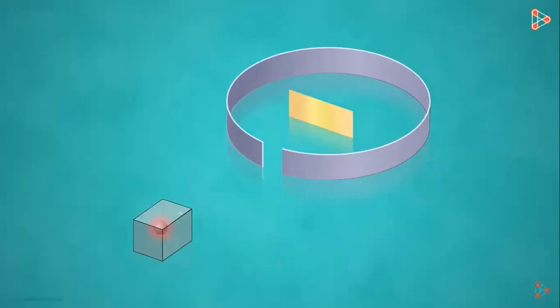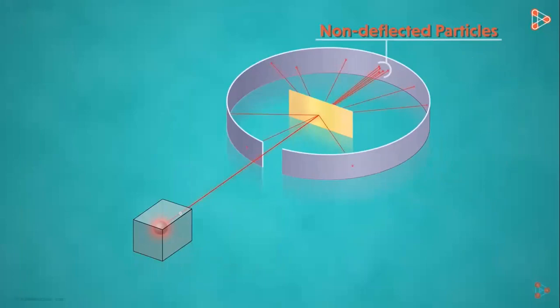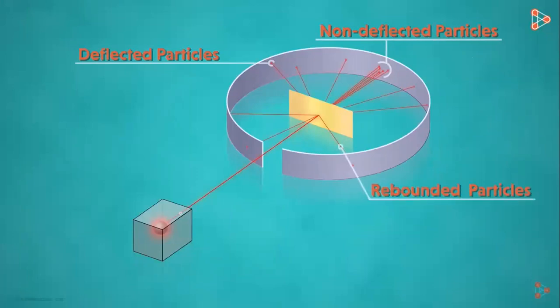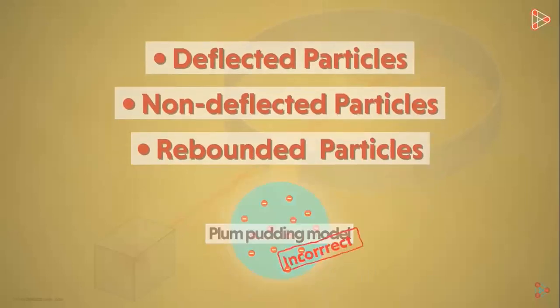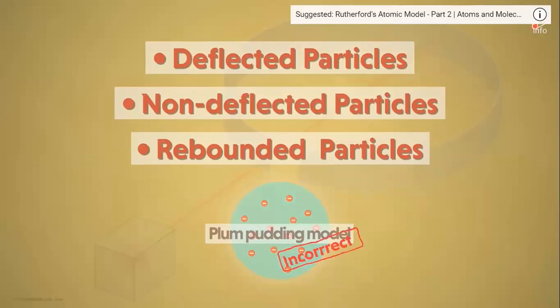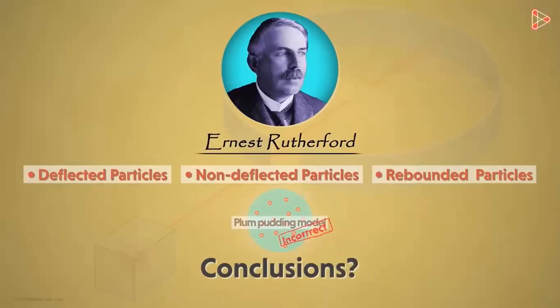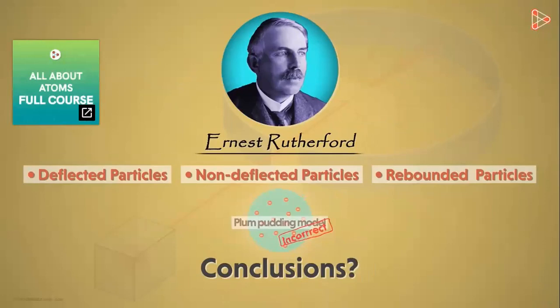He found that most of the fast-moving alpha particles passed straight through the foil and hit the detector. However, some particles got deflected by small angles. And lastly, to his astonishment, a few alpha particles also rebounded. These three observations made Rutherford think that the plum pudding model is not really correct. Based on his conclusions, he put forward a new hypothesis explaining the structure of atoms.